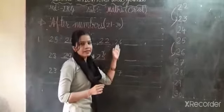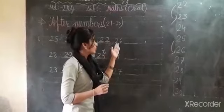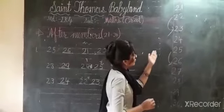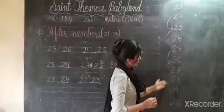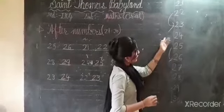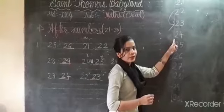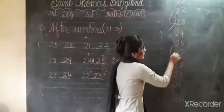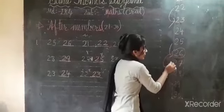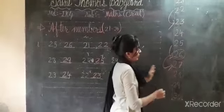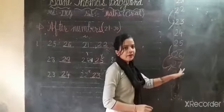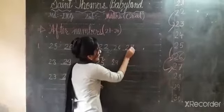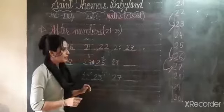See, what is this? This is 26. Where is 26? This one is 26. After 26, what will come? 27. So I write here 27.